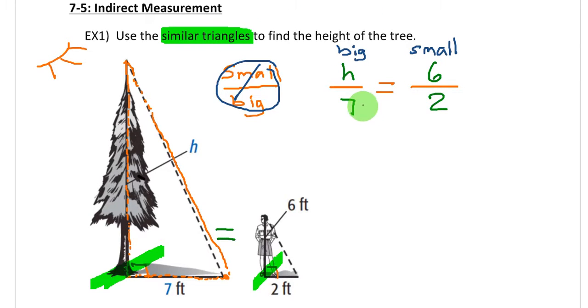So the next step, what I want to do is take the cross products. I'm going to multiply 7 times 6 and H times 2. So now I have 2H is equal to 7 times 6 or 2H equals 42.